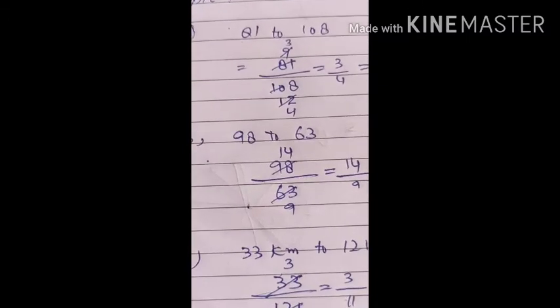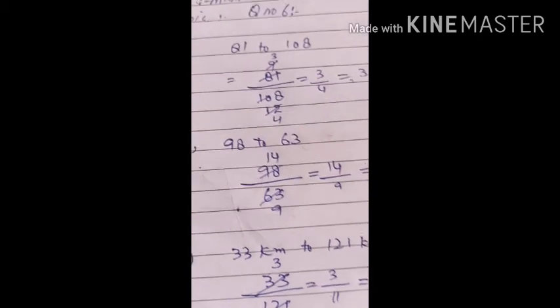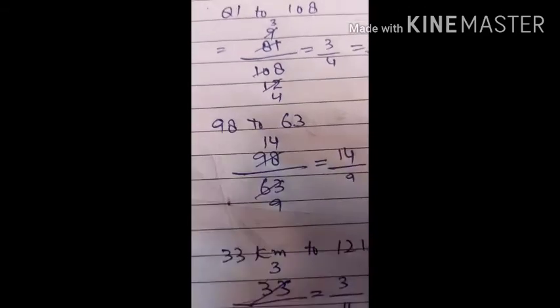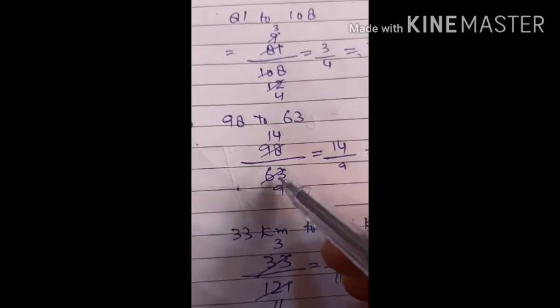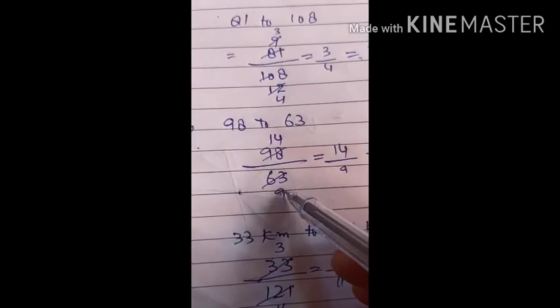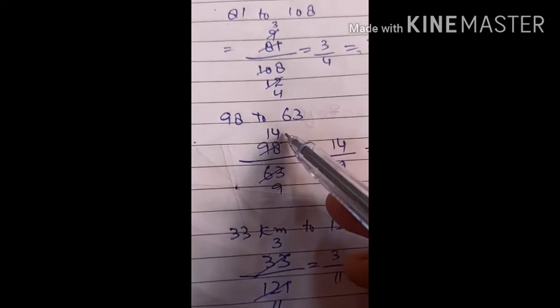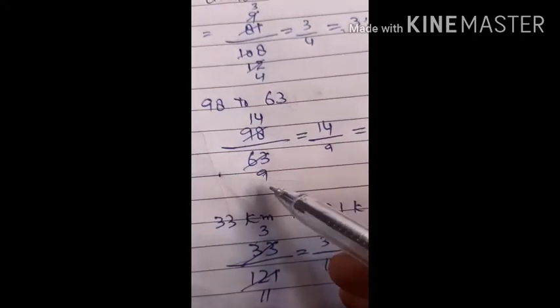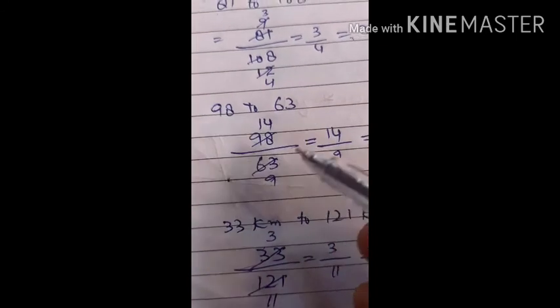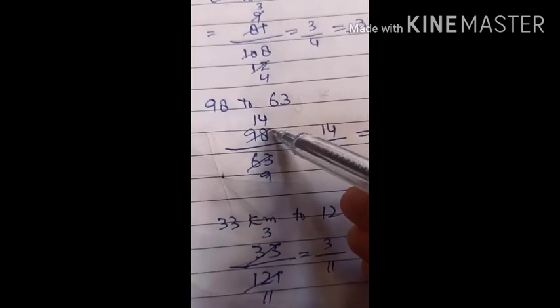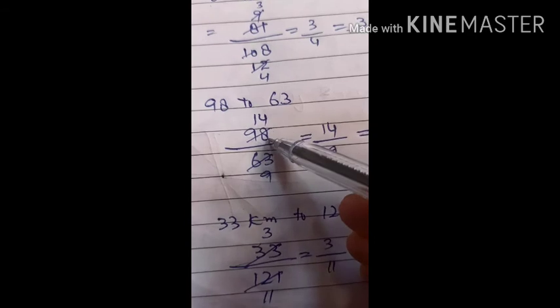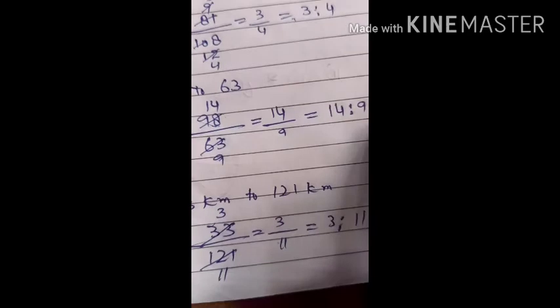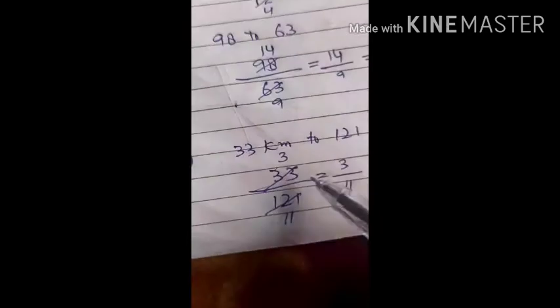Now students, part b is 98 to 63. So we will write 98 divided by 63. Dear students, we will divide by 7: 7 nines are 63, 7 fourteens are 98. This gives us 14 by 9, which is equal to 14 is to 9.